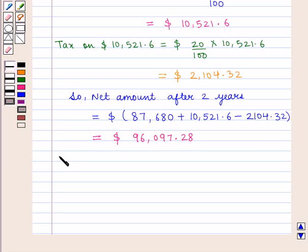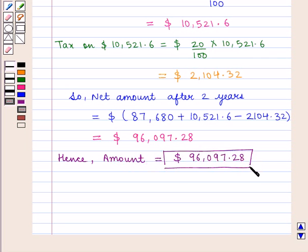Hence, the amount received by him at the end of two years is equal to $96,097.28, which is our final answer. This completes the session. Hope you have understood it well.